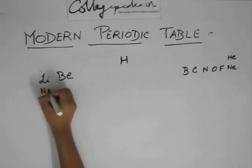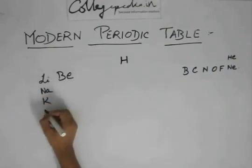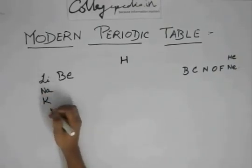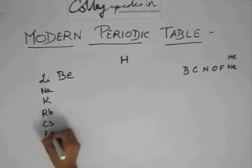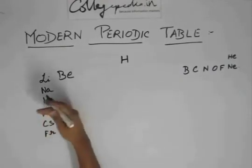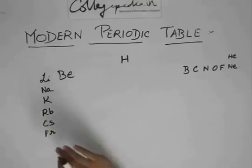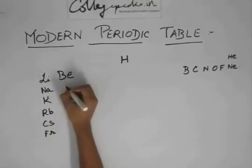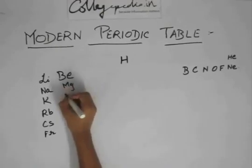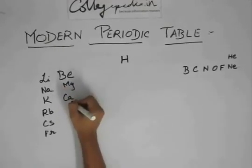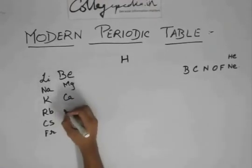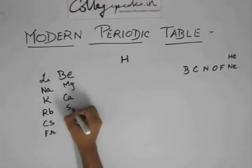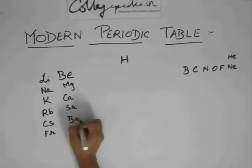Then, under lithium, there was sodium, potassium. Then we have rubidium, cesium, francium. You need to remember only up till potassium. Rubidium, cesium, francium, if needed, they will be given to you. Then under beryllium, we have magnesium, calcium. Again, you need to remember only till calcium. And then after calcium, we have strontium, barium, and radium.